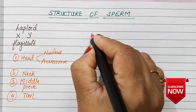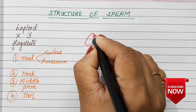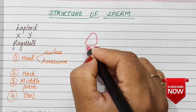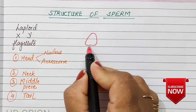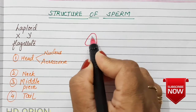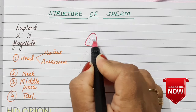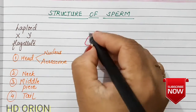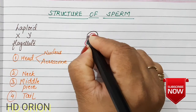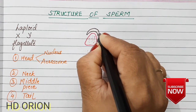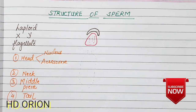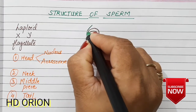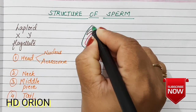The head has a very large nucleus which occupies much of its area, containing all the chromosomes and genetic material. Just above the nucleus is the acrosome, which is made up of the Golgi body. The head region is oval in shape and is meant for penetrating into the egg.